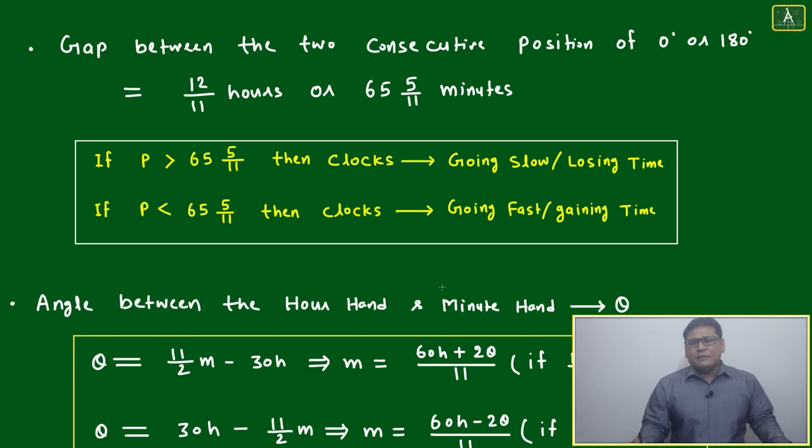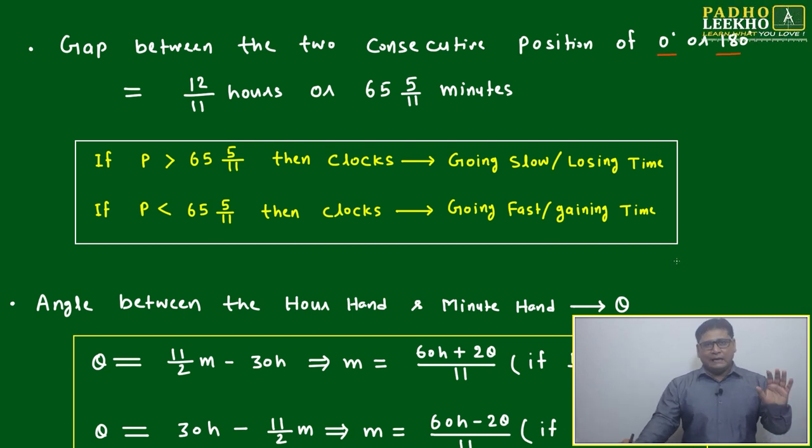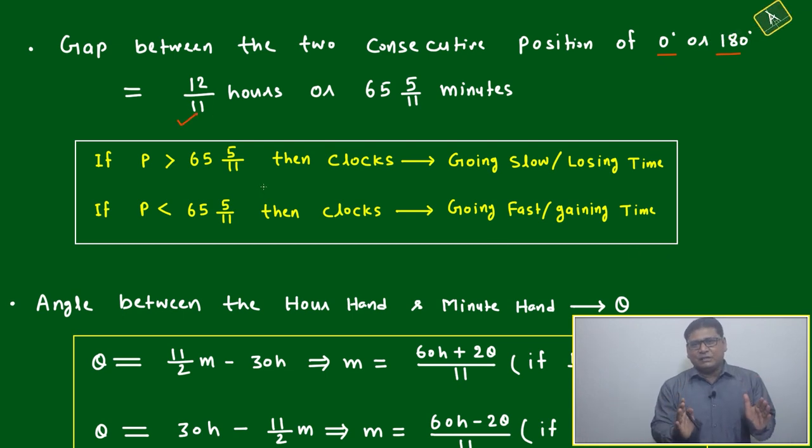An interesting simple arithmetic calculation: the gap between two consecutive positions of 0 degrees or 180 degrees. Because the hands meet 11 times in 12 hours, the time gap between consecutive meetings is 12 by 11 hours. Converting to minutes, this becomes 65 and 5 by 11 minutes.